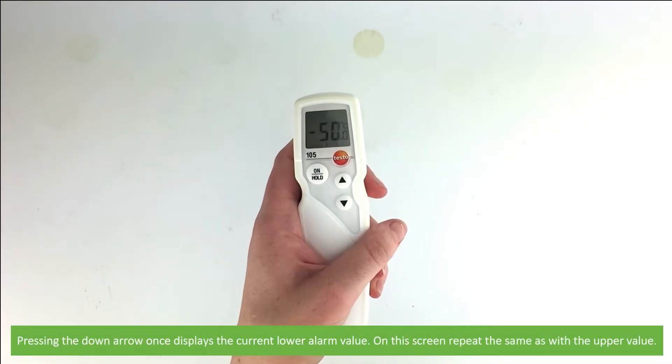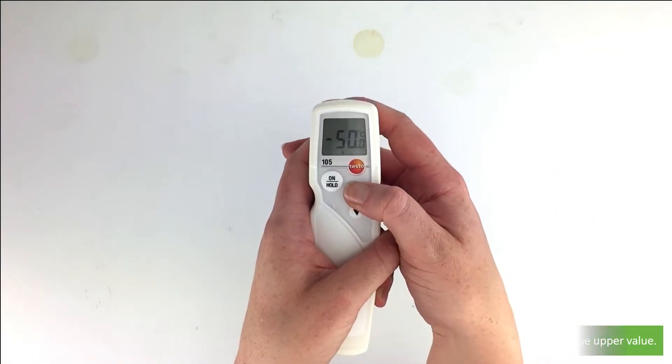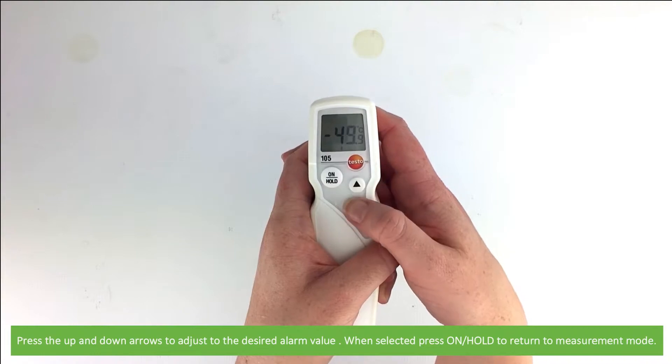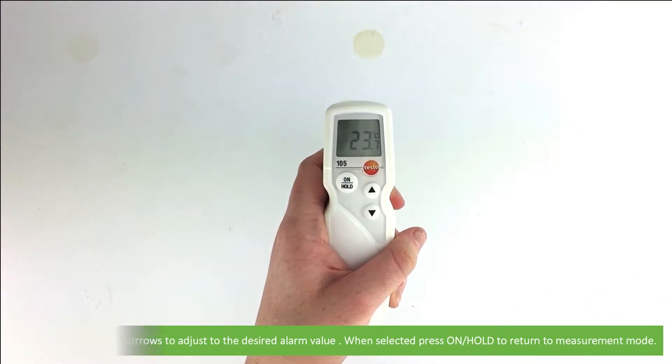Pressing the down button once now displays the lower alarm value. On the screen, repeat the same as with the upper value, pressing the up and down arrows to adjust to the desired alarm value. When selected, press the on hold button to return to measurement mode.